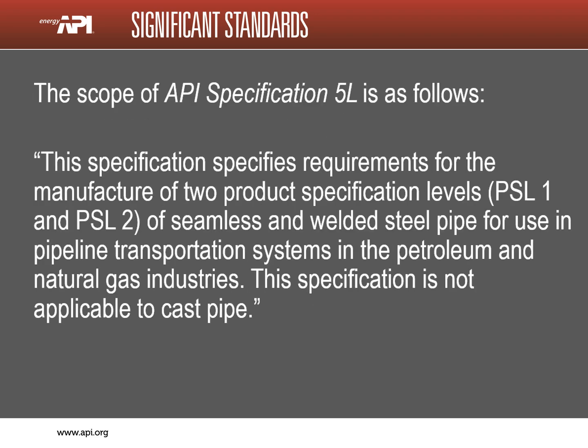API Specification 5L provides requirements for the manufacturer of two product specification levels, PSL 1 and PSL 2, of seamless and welded steel pipe for use in pipeline transportation systems in the petroleum and natural gas industries, and is not applicable to cast pipe.